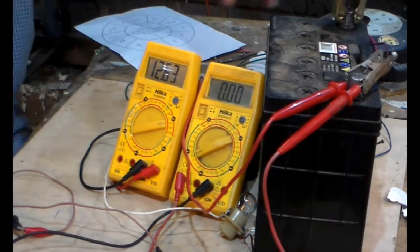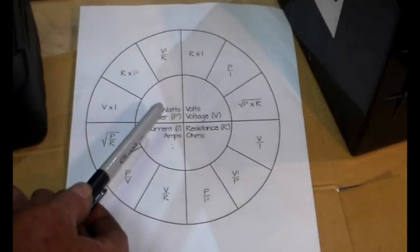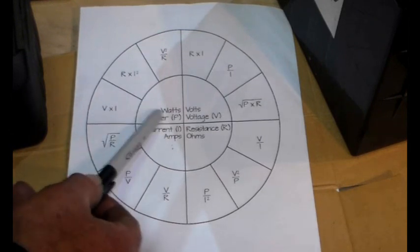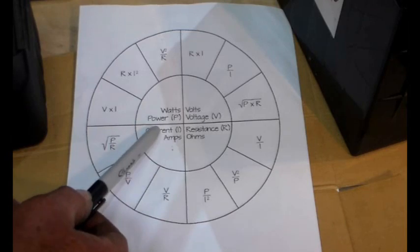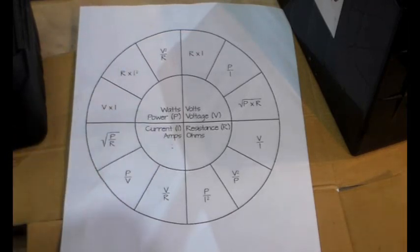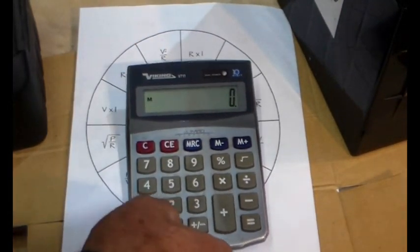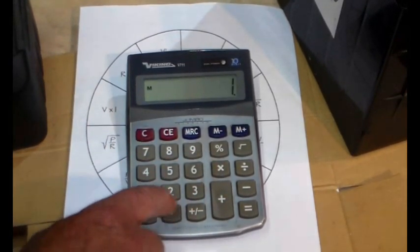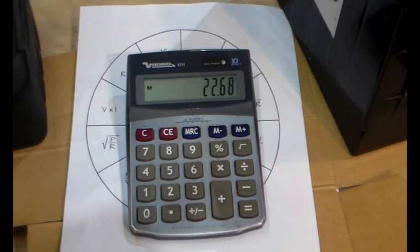So we want watts. We've got volts and we've got current in amps, so watts is volts times amps. Current, you see, is defined as I—don't know why, but there you go. So 12.6 times 1.8 equals 22.6 watts. It's a nominal 21 watt bulb, and we calculated it has 22.6 at that voltage.